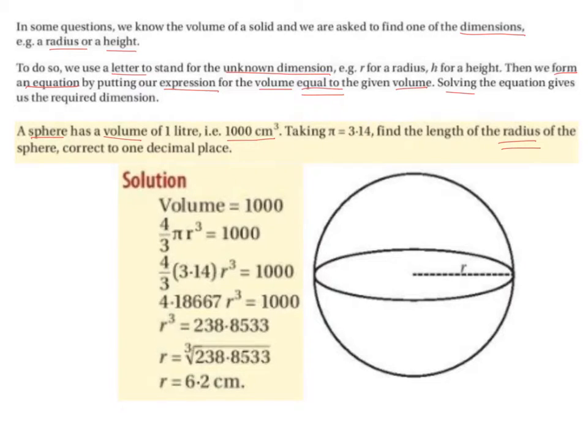So we're trying to find the radius. We know that the volume is equal to a thousand. So we're going to get the formula for a sphere, which is 4 over 3 π r cubed, and let that equal to a thousand. Then we just solve for r.